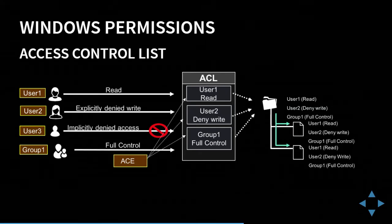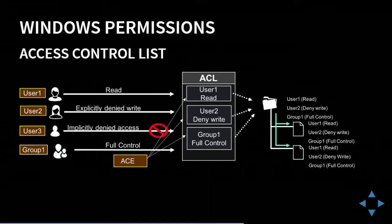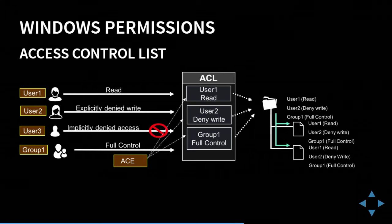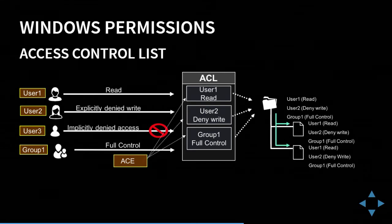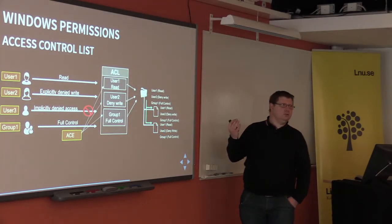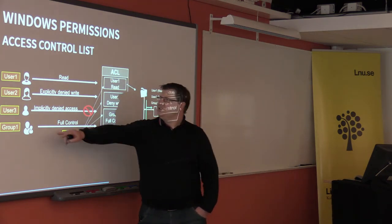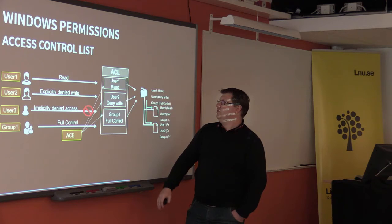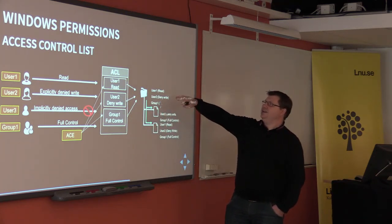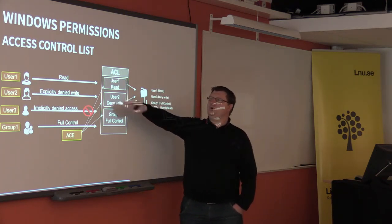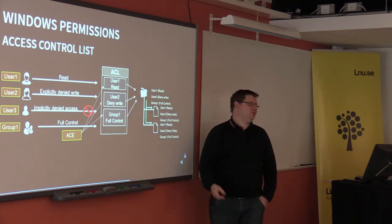These permissions are applied to the files and folders under that folder. Explicit deny has a higher priority than allow. So if user 2 is in the full-control group, they could change permissions but they still won't be able to write.